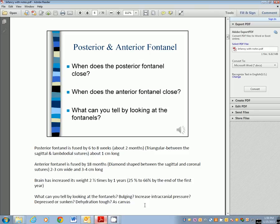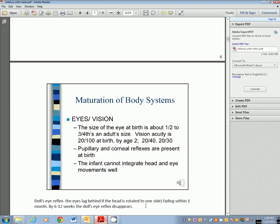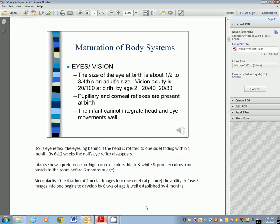What can you tell by looking at the fontanelles? A lot. If they're bulging, that could be caused by increased intracranial pressure. If they're depressed or sunken, dehydration. They really are very tough. Most of us say don't touch their soft spot, but really they're tough, they're like canvas. I'm not saying go around trying to hurt them, and it is better to keep children away from them, but they are pretty tough. They should be flat and smooth if they are normal.